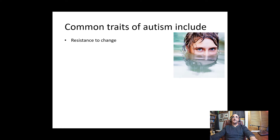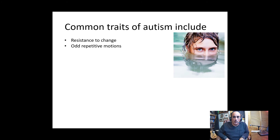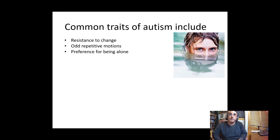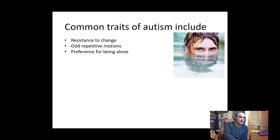Some common traits of autism include a harder time with and resistance to change. People with autism may have odd and repetitive motions such as hand flapping, rocking, or walking back and forth. People with autism may have a preference for being alone, though this doesn't mean they dislike people — many enjoy being around others but also value time to themselves. This varies with personality.